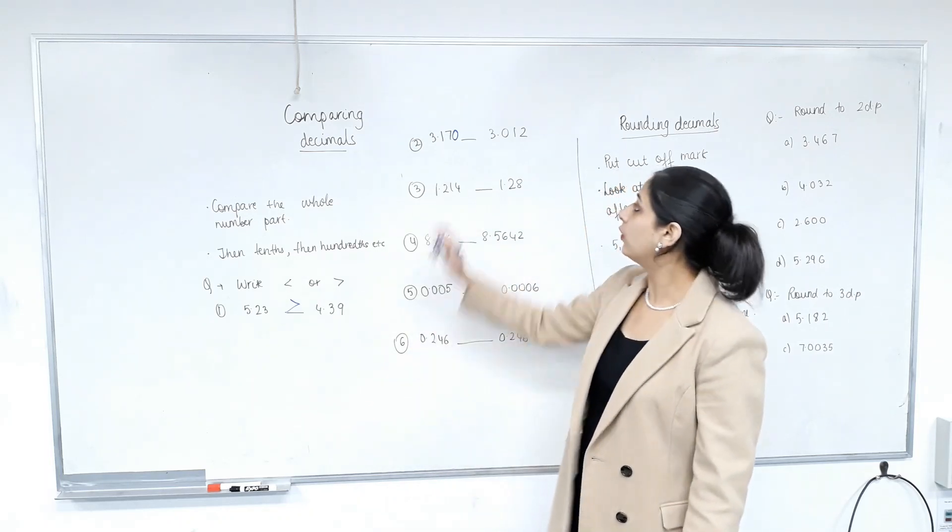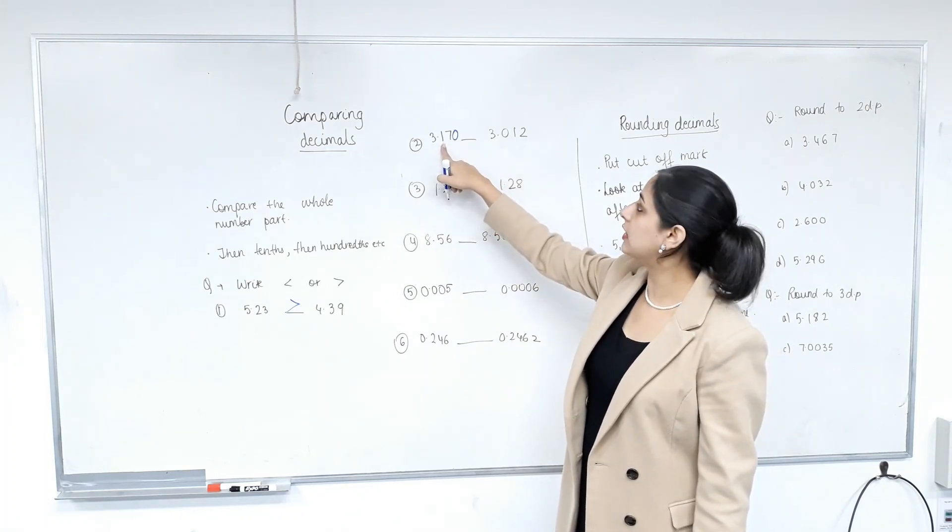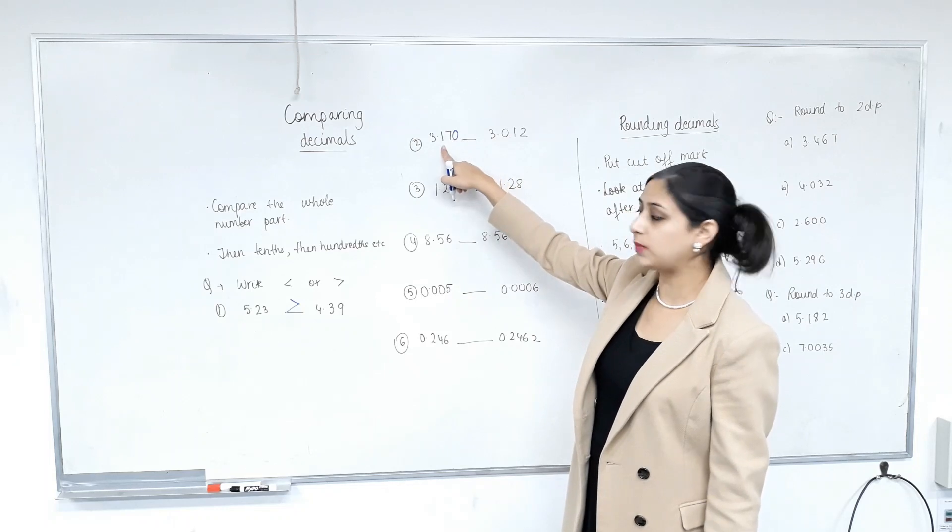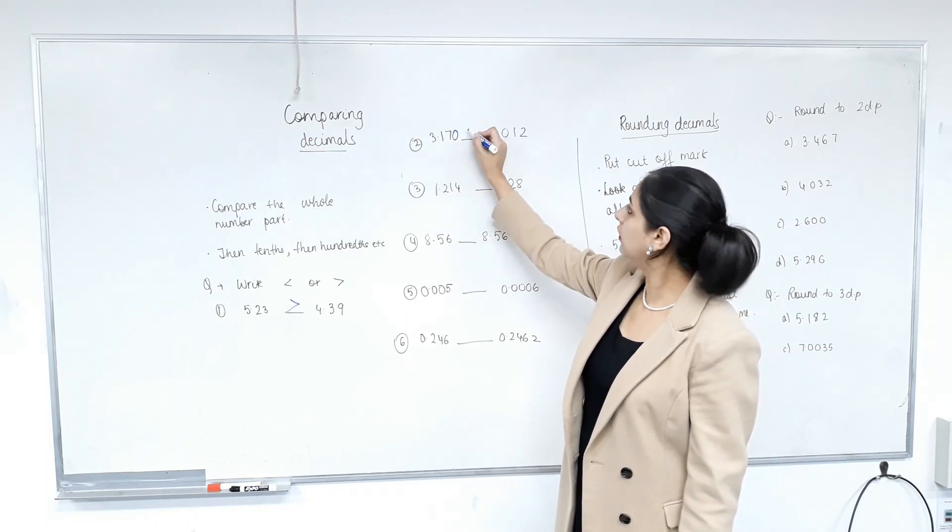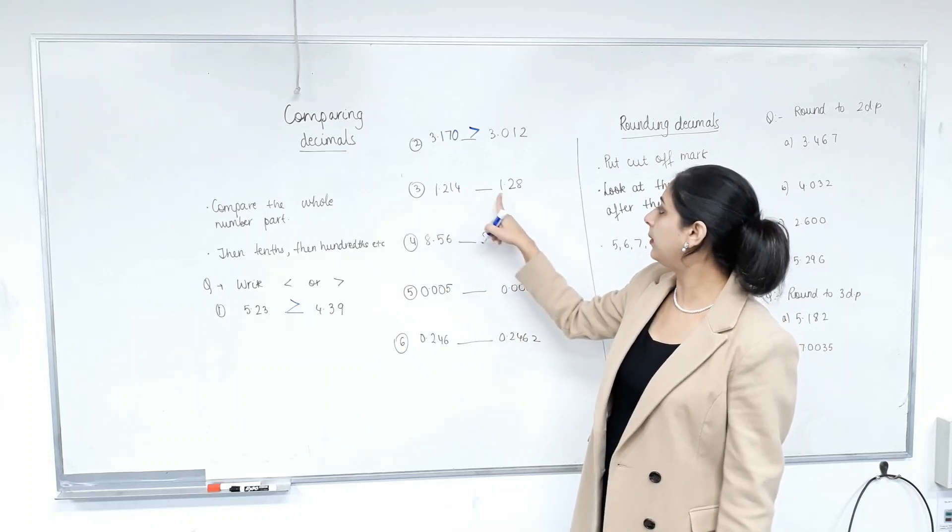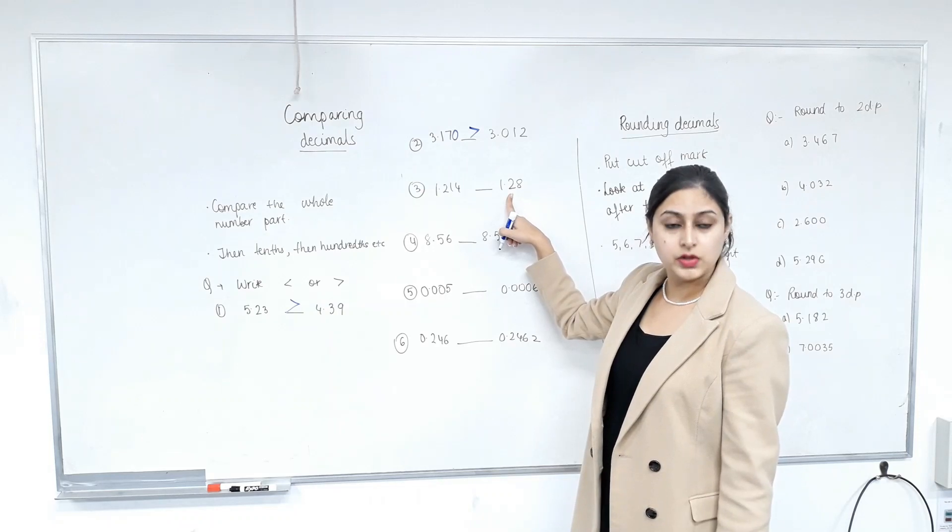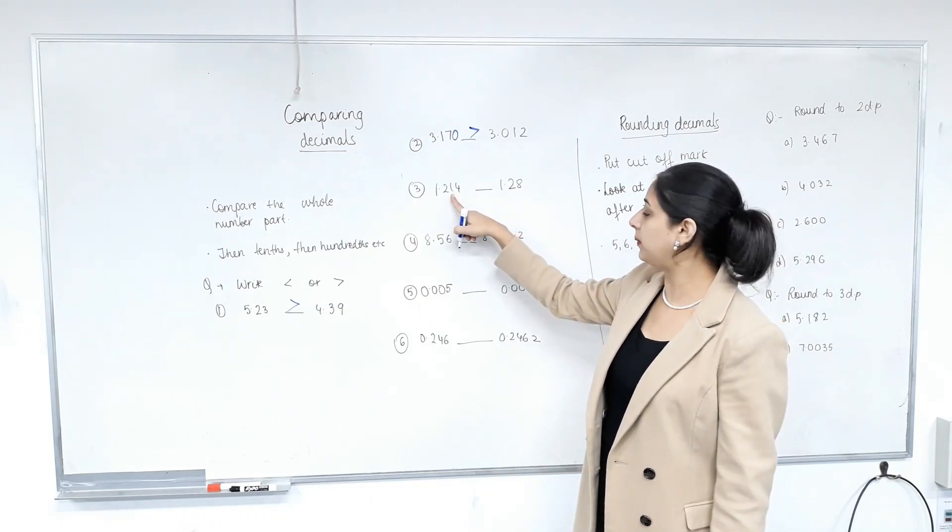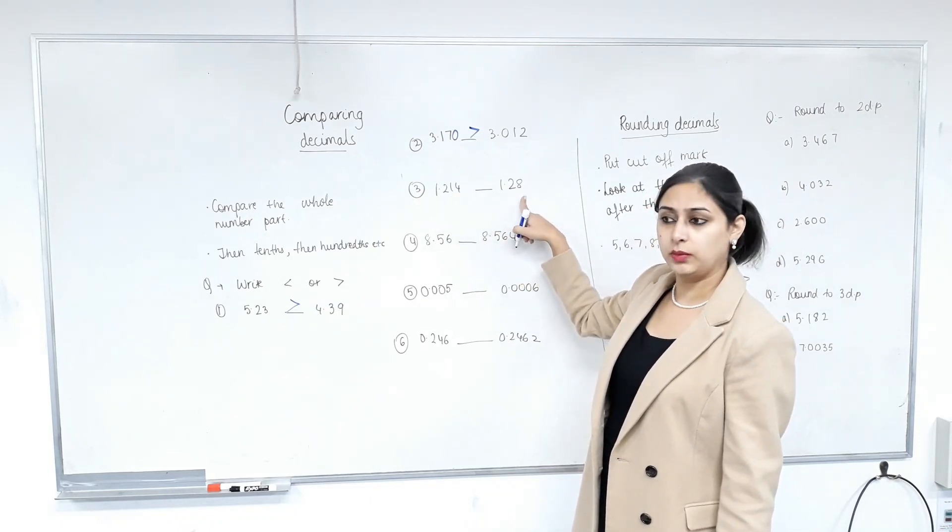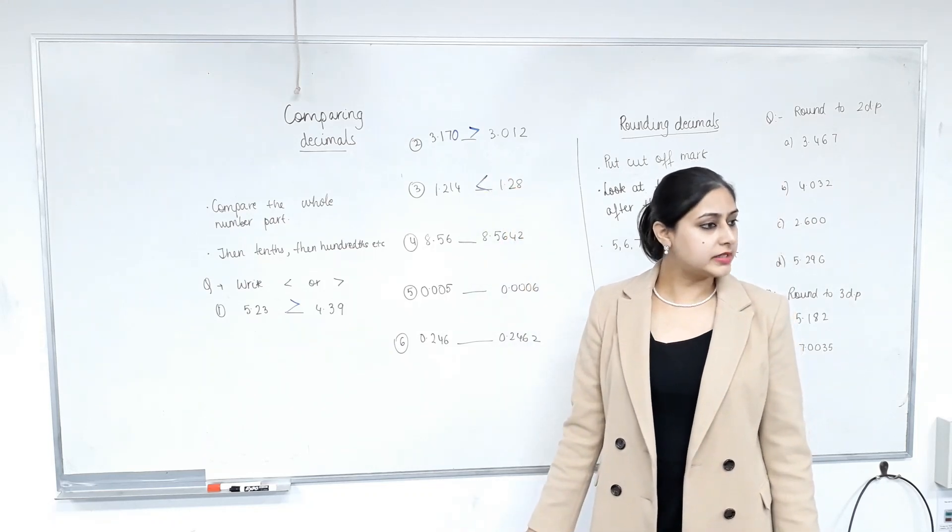Yeah. Now, once we've compared the whole number parts, we look at the tenths. One and zero. Which one's bigger? One. Make sense? Next one. Whole number parts are same. Look at the tenths. Are tenths the same as well? Yep. So you look at the hundredths. What's the hundredth part? One. Eight. Which is bigger? Eight. Making sense?